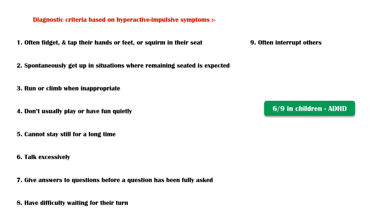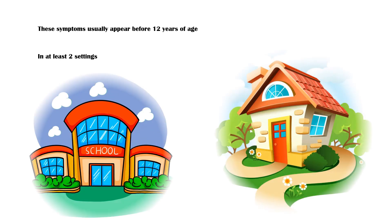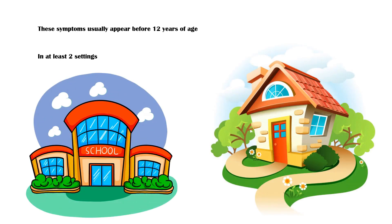Children who have at least six out of the above nine features are considered to have ADHD. In adolescents and adults, the presence of five features is enough to make a diagnosis. It is important to note that these symptoms usually appear before twelve years of age, in at least two settings such as school and home.